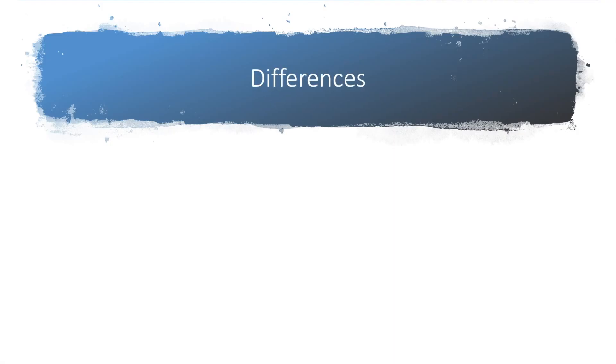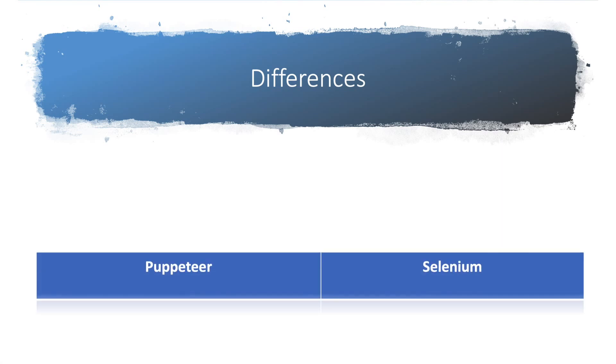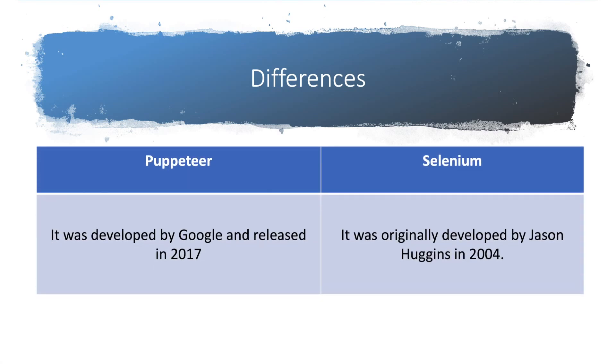So what are the differences? Let's start with the introduction first. Puppeteer is developed by Google and released in 2017, so it's quite recent technology. Selenium was originally developed by Jason Huggins in 2004. We have a 16-year-old technology which is Selenium, and most organizations are using Selenium for their UI automation.